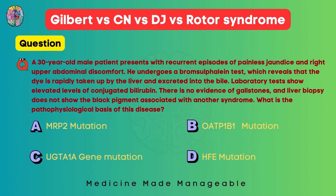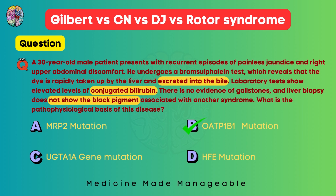A 30-year-old male presents with recurrent painless jaundice and right upper abdominal discomfort. The Bromsulphalein test shows dye is rapidly taken up by the liver and excreted in bile. Lab tests show elevated conjugated bilirubin, no gallstones, and the liver biopsy does not show black pigment. Conjugated bilirubin is increased, the Bromsulphalein test is positive, and the liver is normal — all pointing to Rotor syndrome. The pathophysiological basis is OATP1B1 mutation.